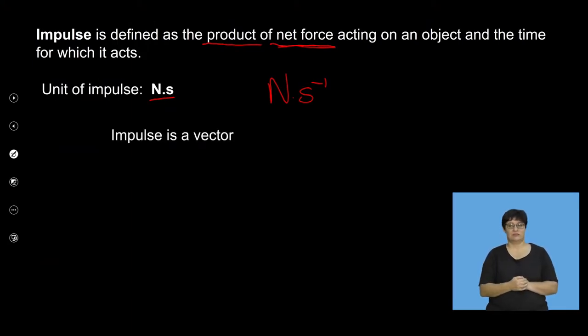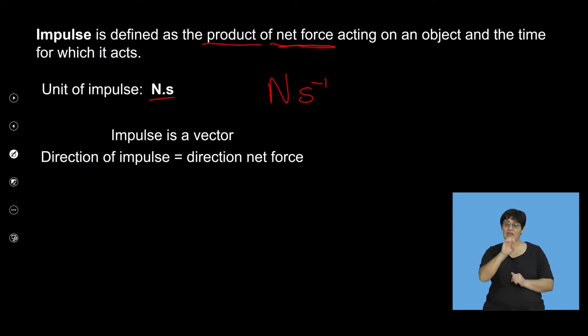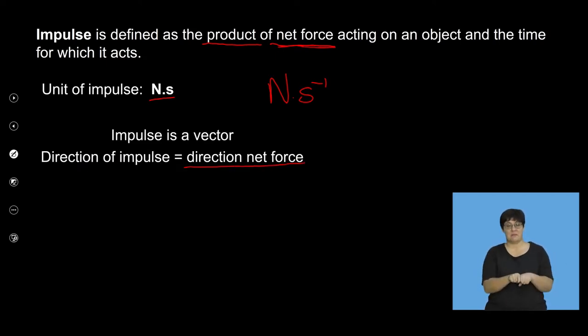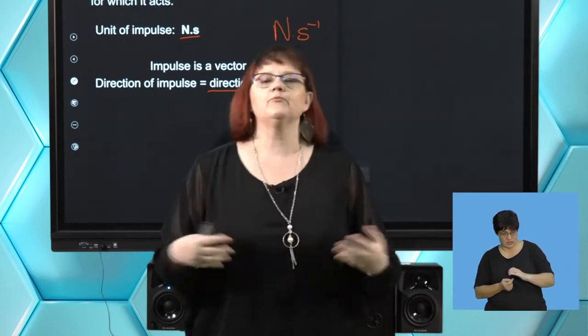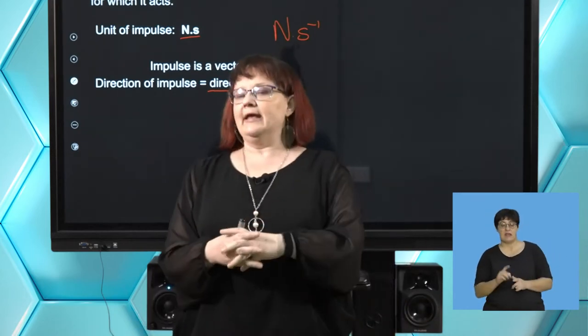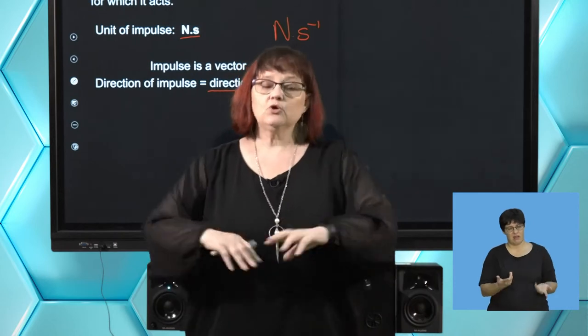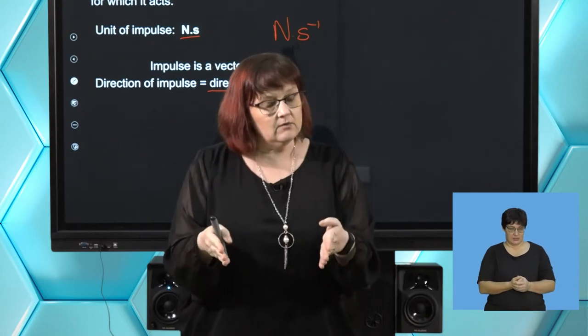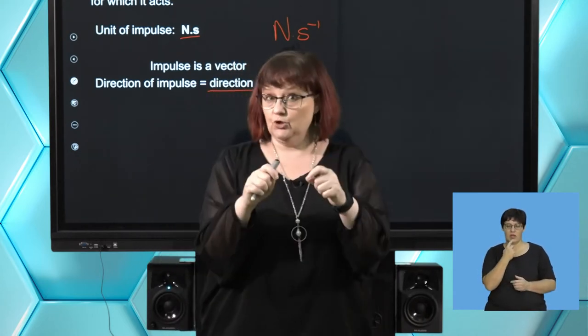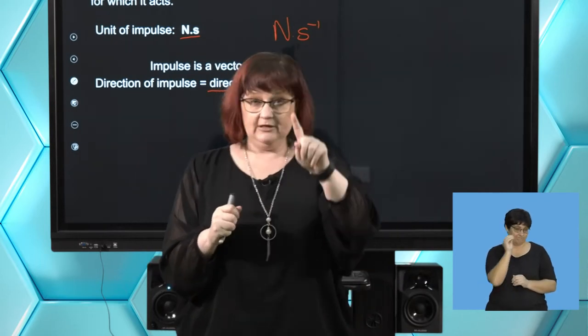Impulse is a vector. The direction of the impulse is the same as the direction of the net force. So if my net force is to the right, impulse is to the right; if my net force is east, then it's east. We have to look at what direction the net force is acting. Now we're going to have to consider Newton's third law again — this becomes important in this section.